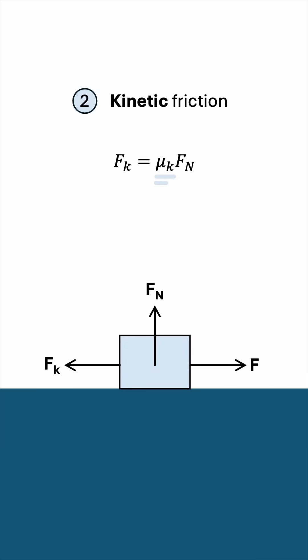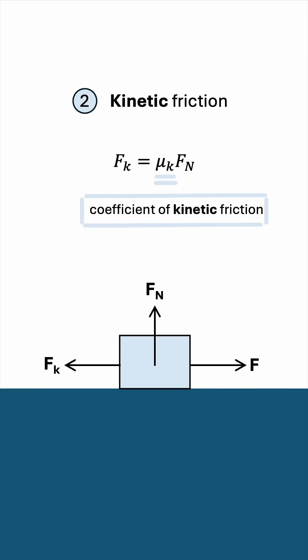μk is the coefficient of kinetic friction, which, for a given surface, is smaller than the coefficient of static friction. And that makes sense, because if you think about it, it's more difficult to make an object start sliding than it is to keep it sliding if it is already sliding. Makes sense?